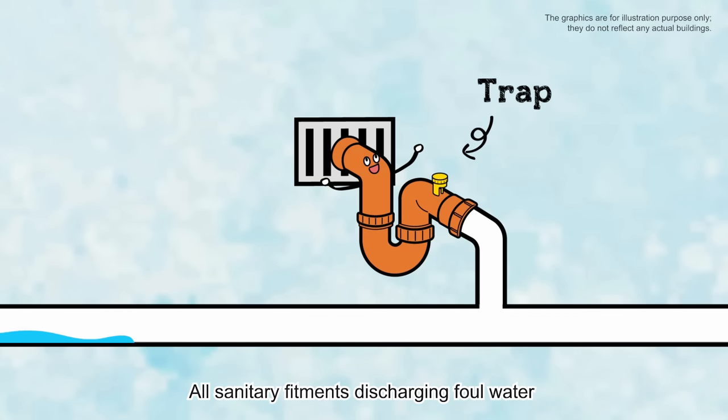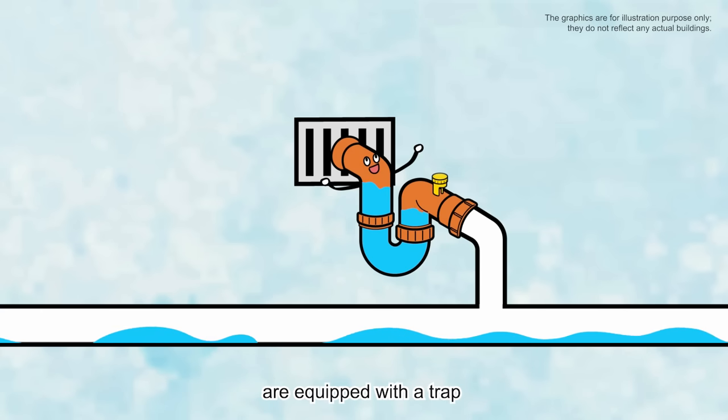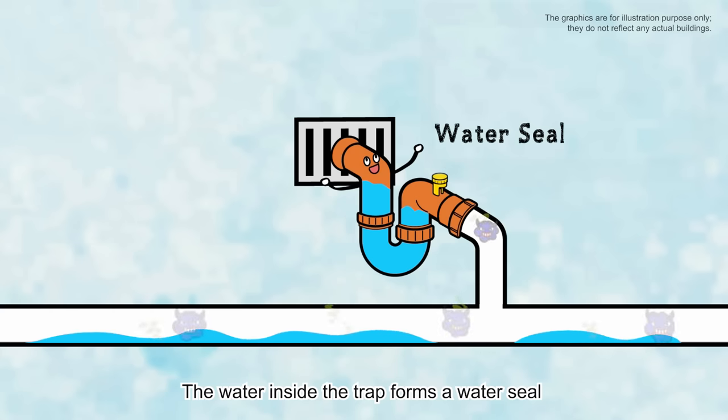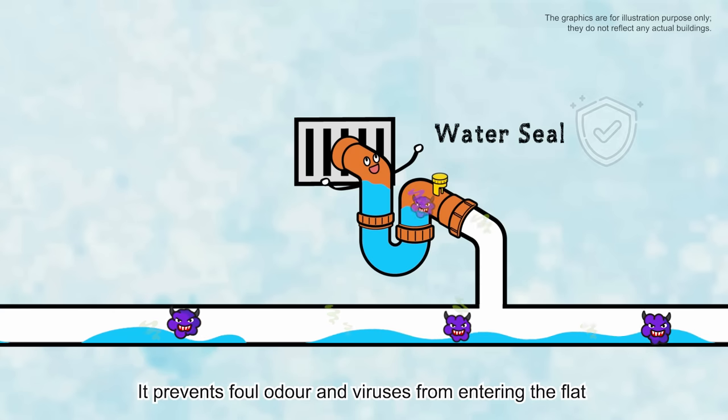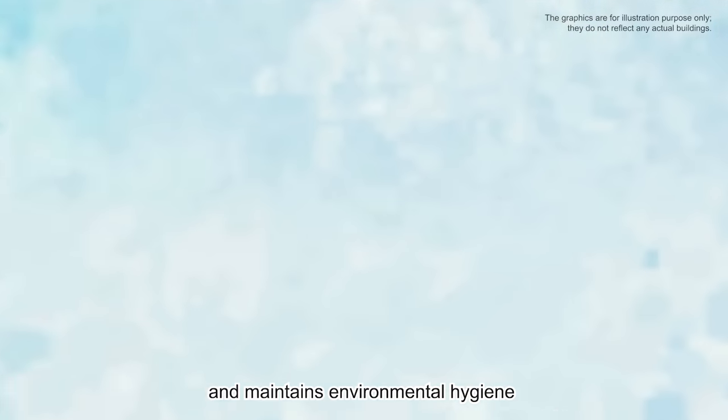All sanitary fitments discharging foul water, such as wash-hand basins, floor drains, washing machines and water closets, are equipped with a trap. The water inside the trap forms a water seal. It prevents foul odor and viruses from entering the flat and maintains environmental hygiene.